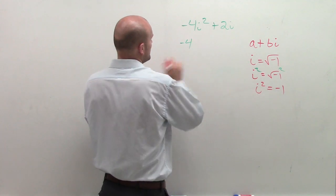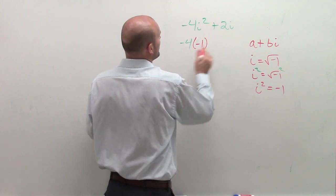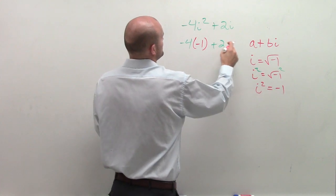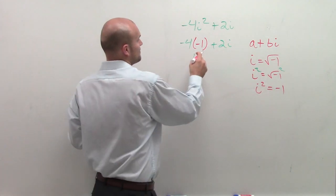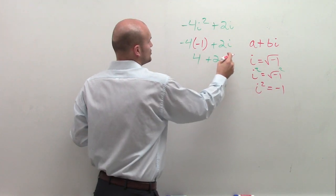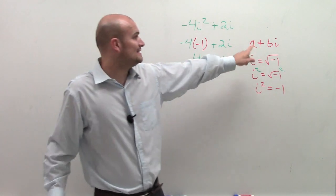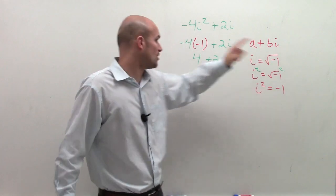So I write negative 4 times negative 1 plus 2i. So now I can do negative 4 times negative 1 is a positive 4 plus 2i, where now you can see this number is now written in standard form.